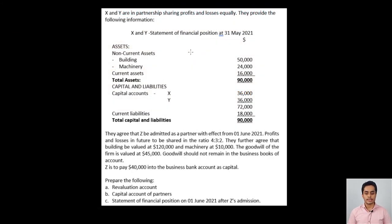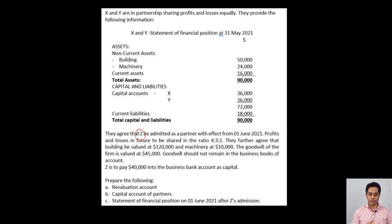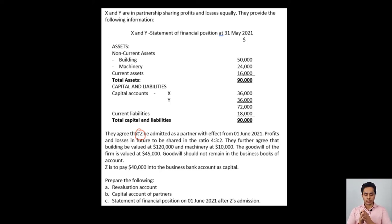Here we have a question on admission. X and Y are in partnership sharing profits and losses equally — old profit sharing ratio is 1:1, each getting 50%. Their balance sheet of the old firm is given. Z is admitted as a new partner with effect from 1st June 2021. The new profit sharing ratio will be 4:3:2. The building will be revalued at $120,000 (currently $50,000 in the balance sheet), machinery revalued at $10,000, goodwill of the firm is valued at $45,000, and Z will bring in $40,000 into the business bank account as capital contribution. We need to prepare the revaluation account, capital account, and statement of financial position.